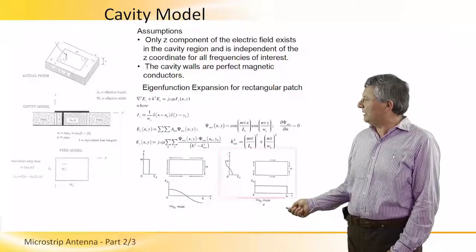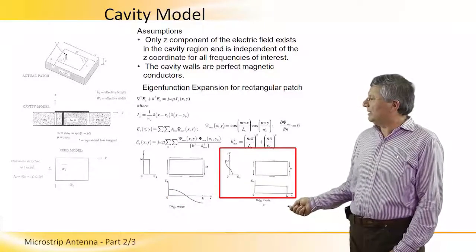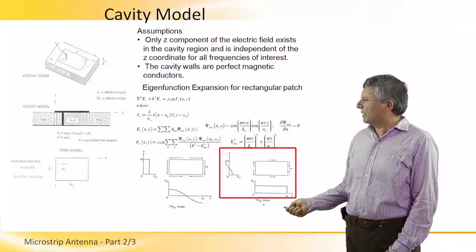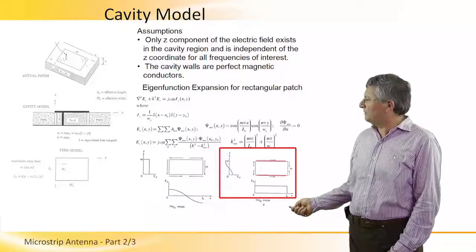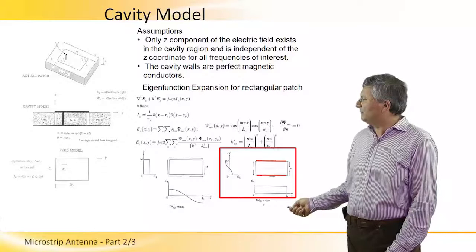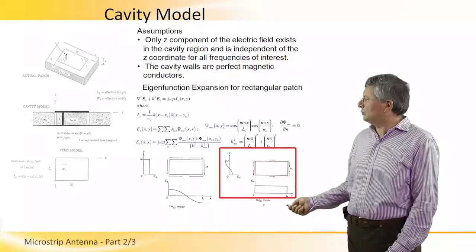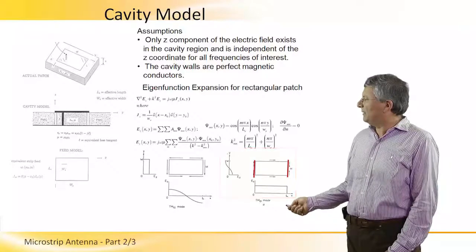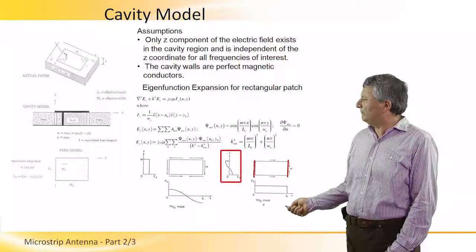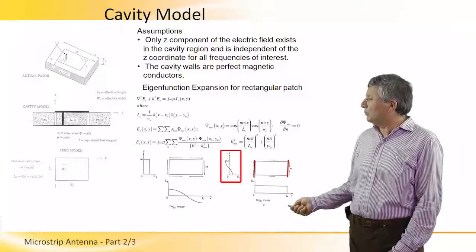and for the TM01, the picture is actually reversed, such that on this wall, we obtain a constant electric field, and on those two sides, we obtain a variation of the electric field from minimum to maximum.